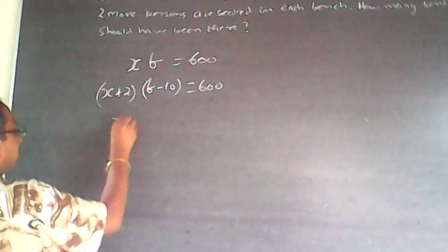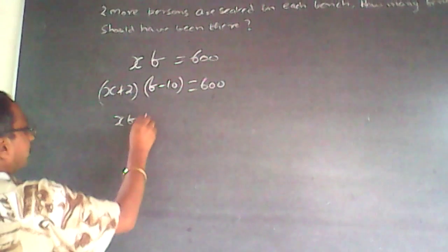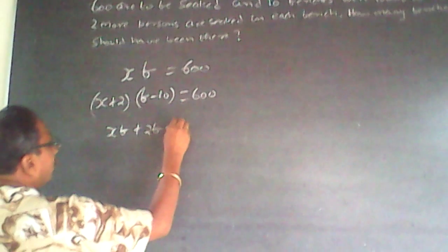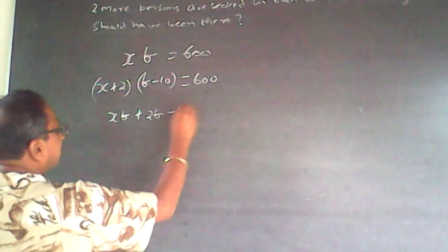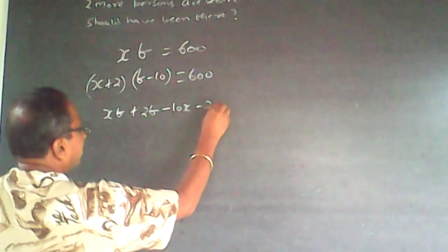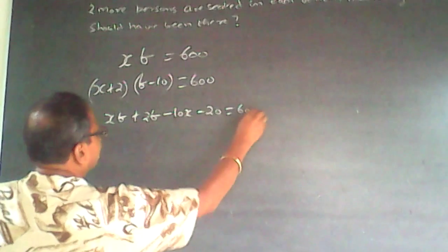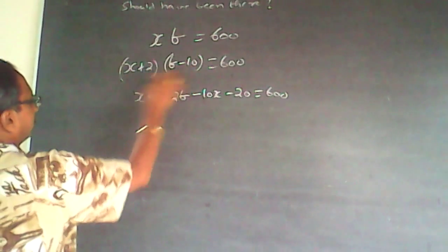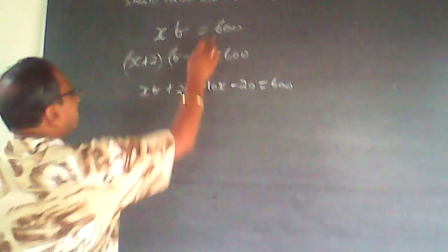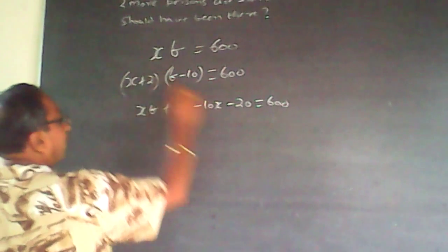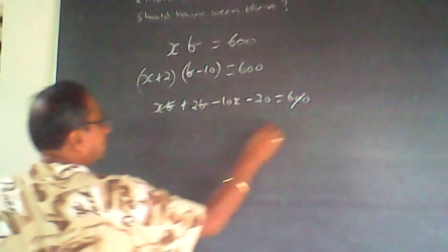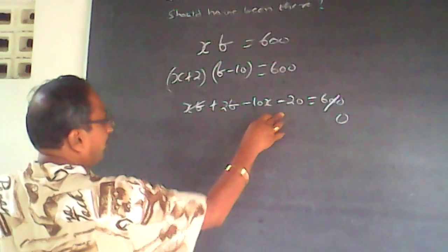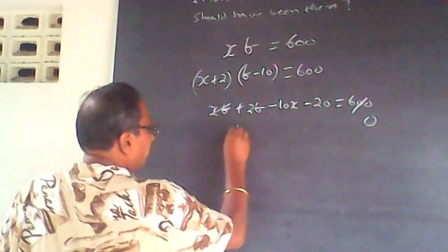Expanding: xb plus 2b minus 10x minus 20 equals 600. Multiply each term — this with this, and this with this. Now because xb equals 600, we cancel that out, leaving 2b minus 10x minus 20 equals 0. Dividing the equation by 2 gives b minus 5x minus 10 equals 0.